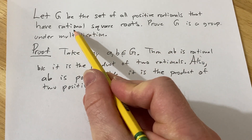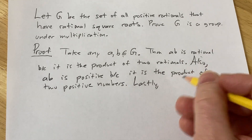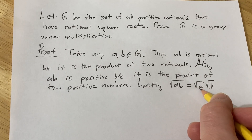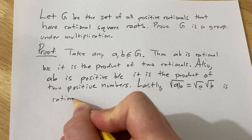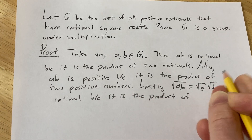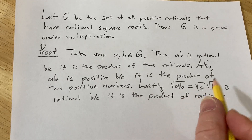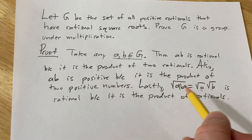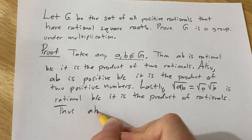Now we just need to verify that a·b has a rational square root. The square root of a·b equals the square root of a times the square root of b. These are both rational, so this is the product of rationals, and is therefore also rational.